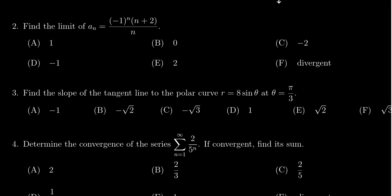In this video, we provide the solution to question number two for practice exam number four for Math 1220, in which case we have to compute the limit of the sequence where a_n is given as (-1)^n times (n+2) over n.